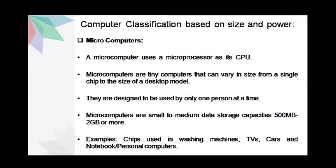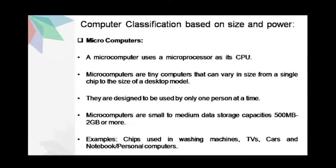Computers can be classified according to their size and power into four categories: microcomputers, mini computers, mainframe computers and supercomputers. A microcomputer uses a microprocessor as its central processing unit. Microcomputers are tiny computers that can vary in size from a single chip to the size of a desktop model. They are designed to be used by only one person at a time. Microcomputers have small to medium data storage capabilities that may range from 500MB to 2GB, but nowadays even more.